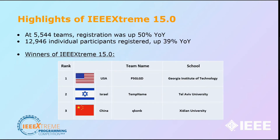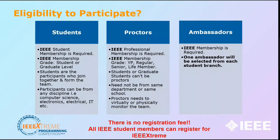These were the main highlights of IEEE Xtreme 15.0. The winners were from Georgia Institute of Technology, Tel Aviv University, and Jilin University of China — the top three teams for IEEE Xtreme 15.0. There is no registration fee for IEEE Xtreme — it is compulsory to have a student membership, but no separate registration fee is required. The membership can be at student or graduate level. Students from any discipline — computer science, IT, electronics, electrical, civil, mechanical, anything — can join together to form a team. Just the knack of programming is required.